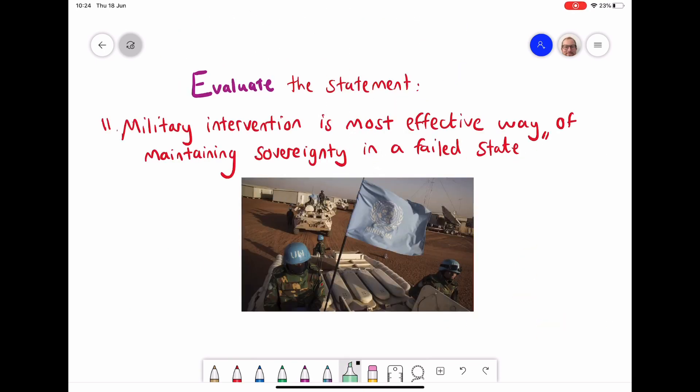Here's an example of a question in which we know that we have to apply AO2. We know that because it's got the word evaluate. And what we would do, as we do with all questions, is break it down to make it a bit more manageable. So it's talking about military intervention. It's talking about is that the most effective way of maintaining sovereignty. And the other word that we need to look at is failed state.